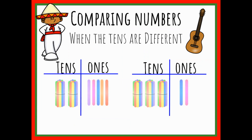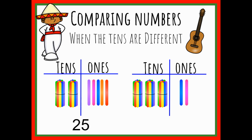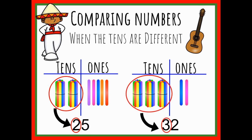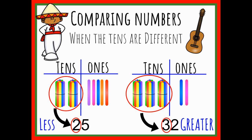Now let's look at two numbers. On the left, I see that I have two groups of 10 and five ones, making the number 25. On the right, I have three groups of 10 and two ones, making the number 32. My focus is going to go to the tens. I see on the left that I have two groups of 10, and on the right that I have three groups of 10. When my tens are different, it helps me figure out which number is greater, because I know that 30, or three groups of 10, is greater than 20, two groups of 10. Therefore, I know that 32 is my greater number. 25 is less than 32.